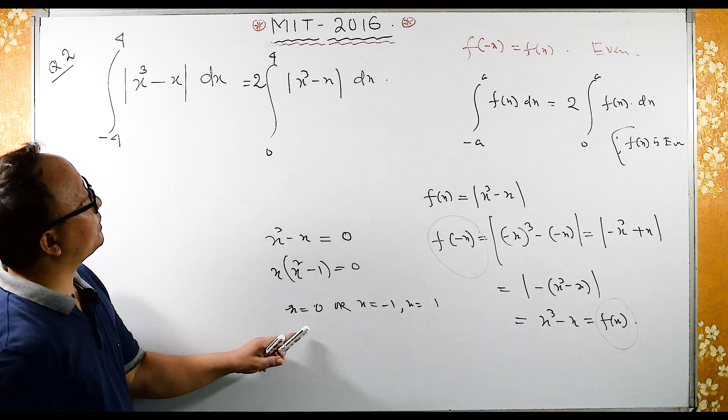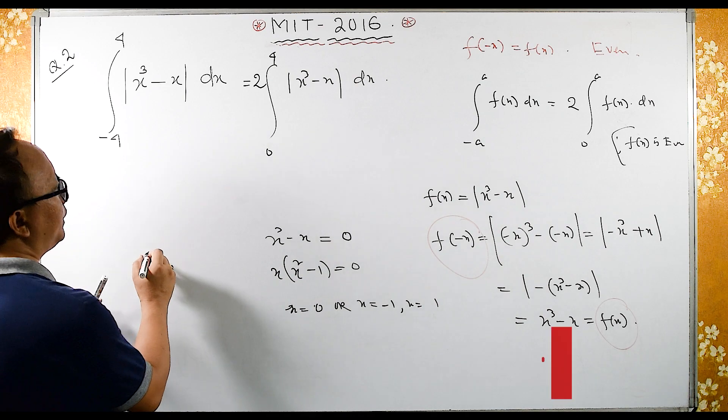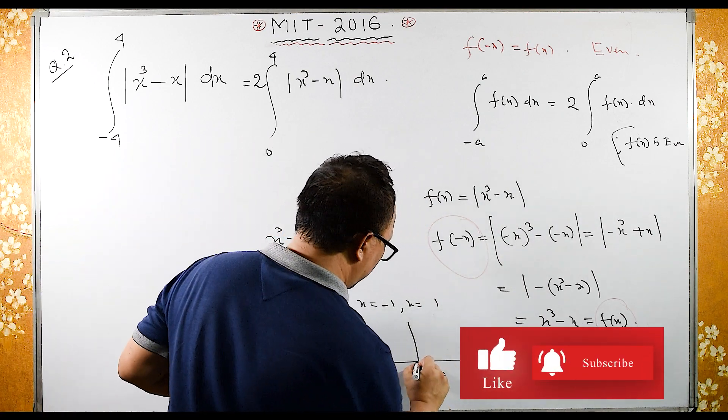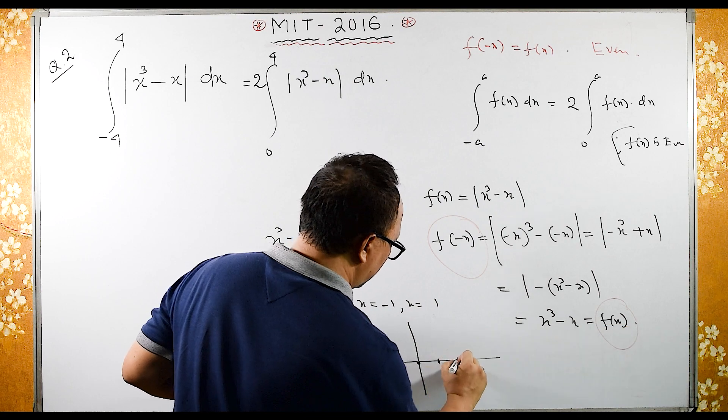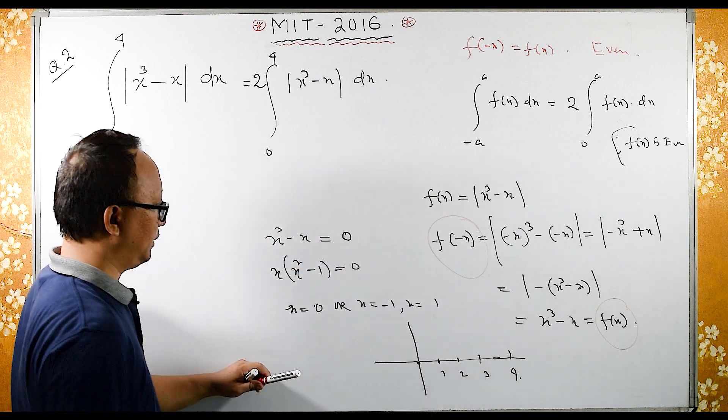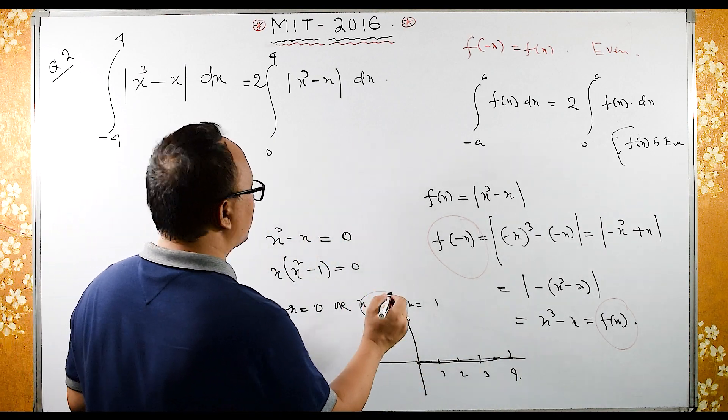So since we have this curve, let us see this curve. Now here let us see over here. Here 0, say 1, 2, 3, 4. Since it is 0 to 4, so minus 1 we have to neglect minus 1.